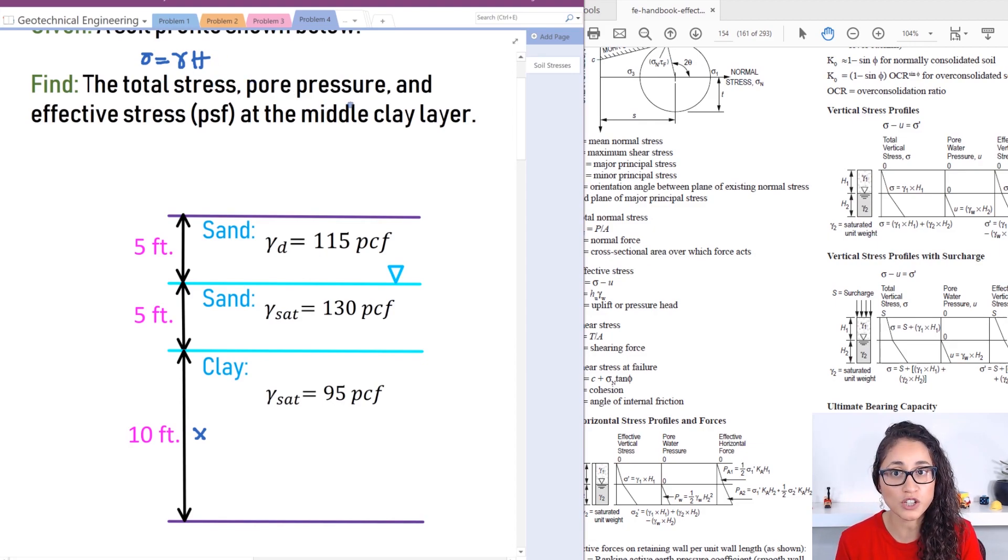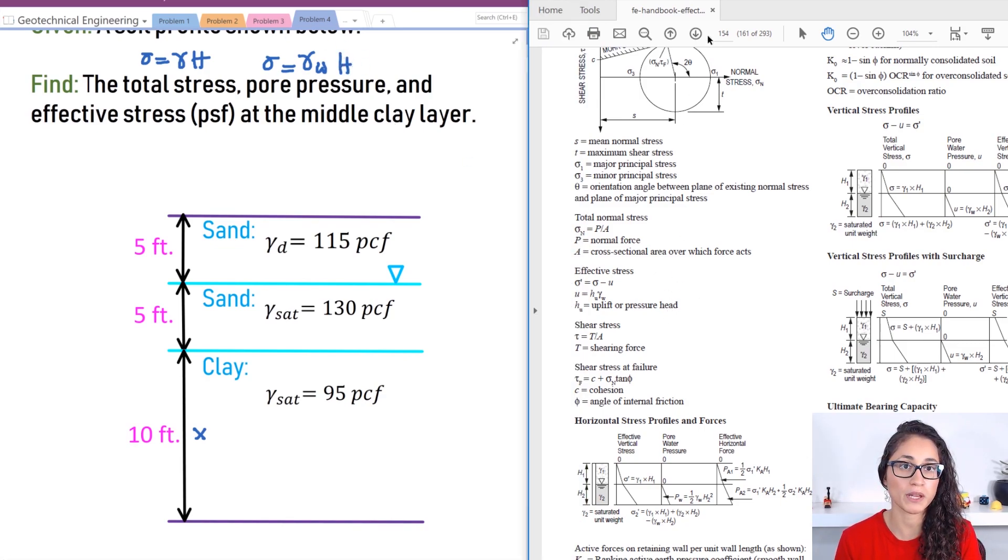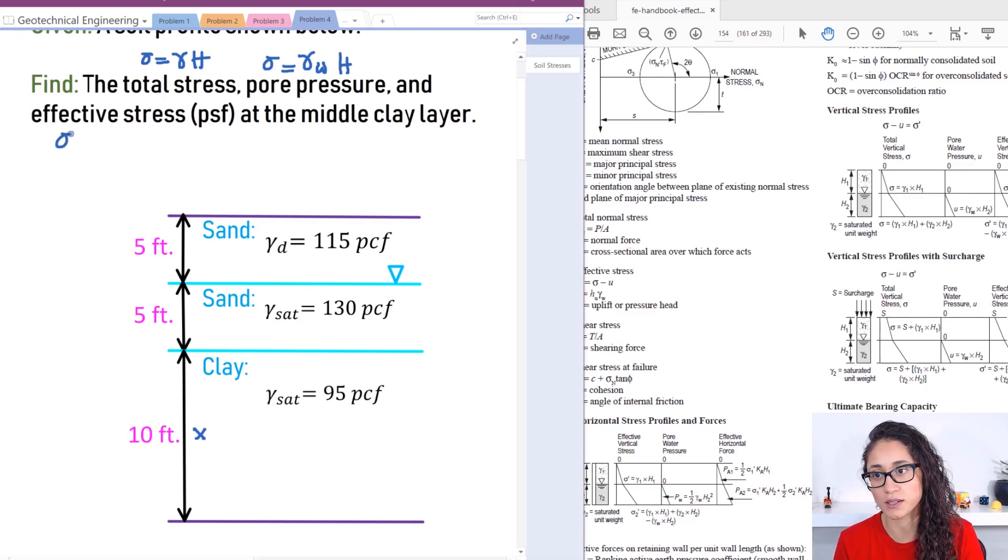Now for the pore pressure, that's just the water pressure, and usually we do sigma equals gamma water times h. The equation is also on page 154. Now the effective stress is a little bit tricky because what we do is the total stress minus the pore pressure. So we subtract the water pressure so that we get the effective stress. We usually do sigma prime equals gamma minus gamma water times h. So this is the effective stress.